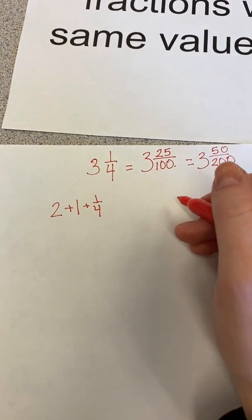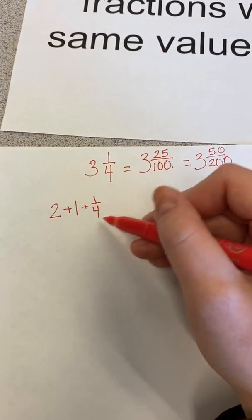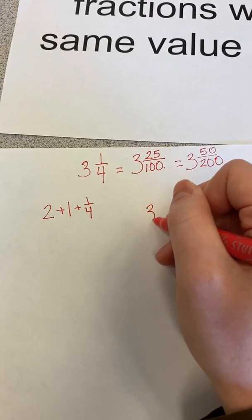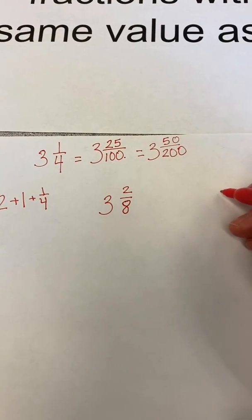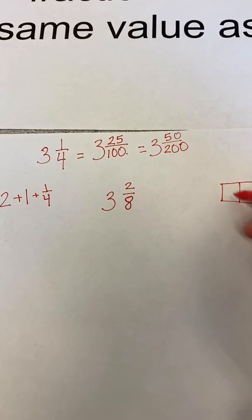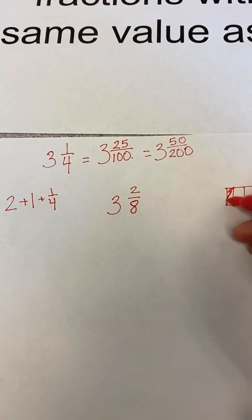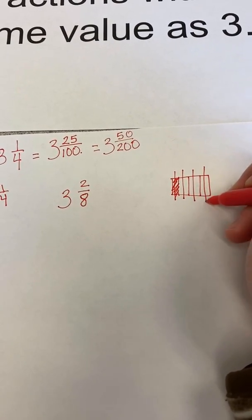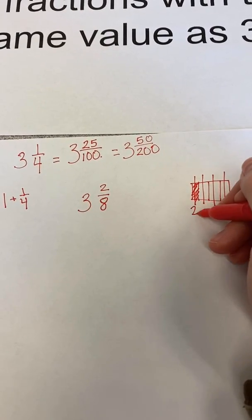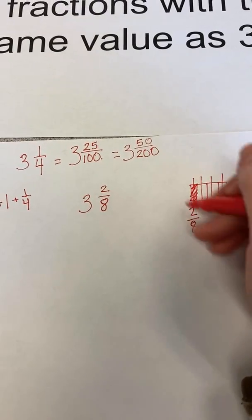And I could also figure out that one-fourth is the same as two-eighths. If I were to sketch that out, one-fourth and then split each of my fourths in half. Instead of having one-fourth, I now have a whole that's split up into eight-eighths.